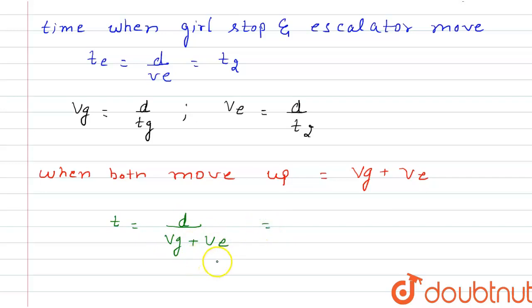Now we put the value of vg and ve and we get d divided by d divided by t1 plus d divided by t2.